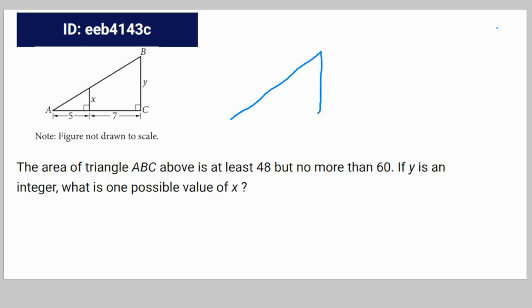So we have two triangles here: ABC, which can be expressed like this, and a smaller triangle inside of ABC, which can be expressed like this.